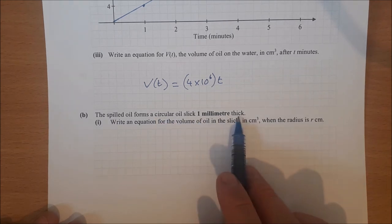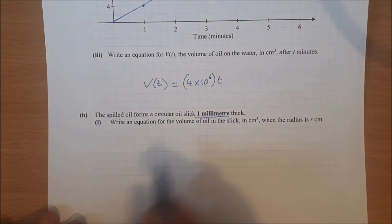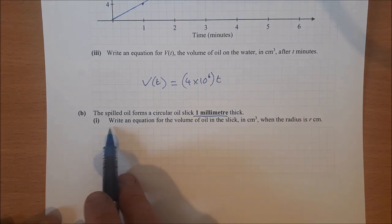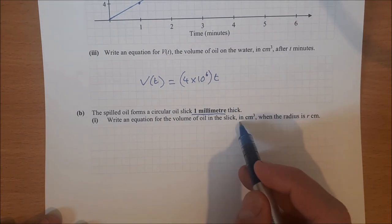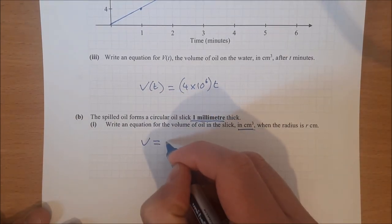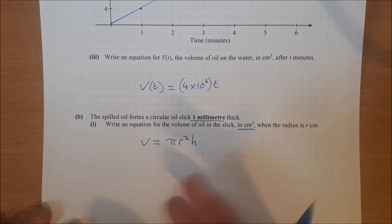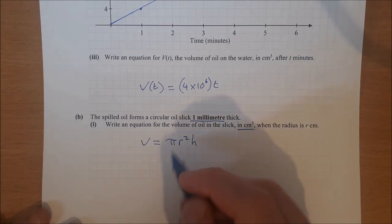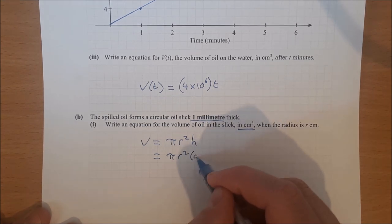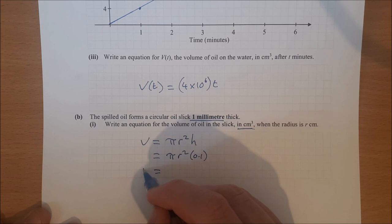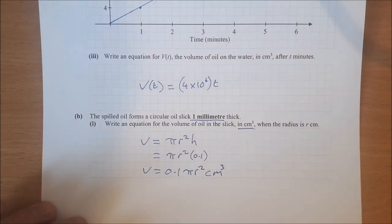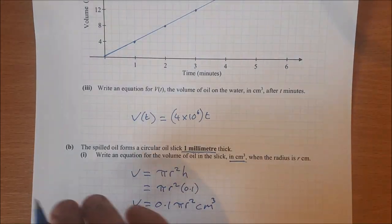The spilled oil forms a circular oil slick 1 millimeter thick — that's highlighted in bold because we were dealing in centimeters and now we're in millimeters. Write an equation for the volume of the oil slick in cubic centimeters when the radius is r centimeters. Volume equals πr²h because it's a cylinder — a very thin cylinder, but a circle with height — so V = πr²h = πr² × 0.1 (since 1mm = 0.1cm), giving V = 0.1πr² cubic centimeters.